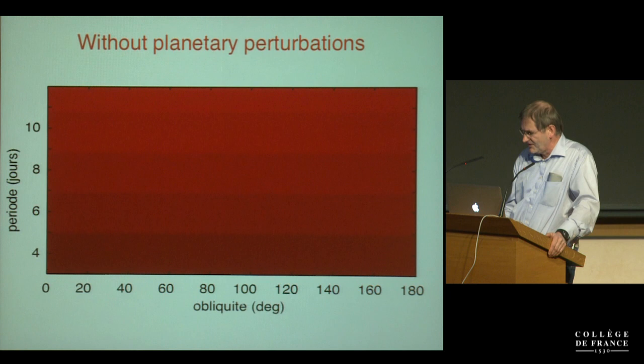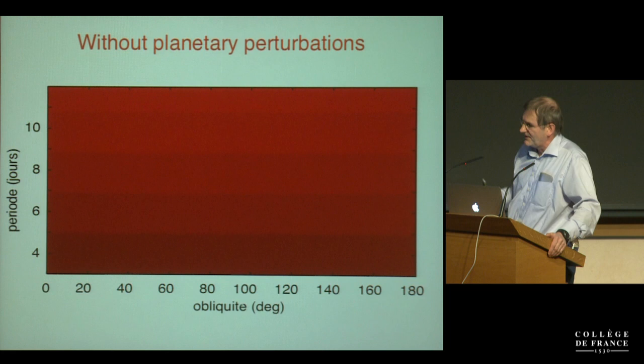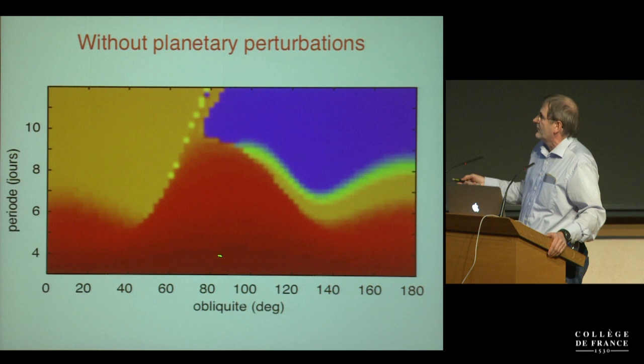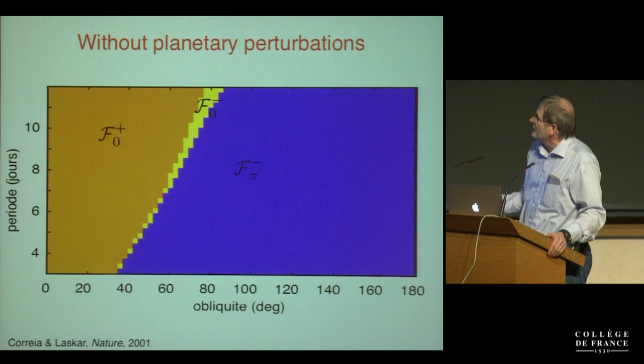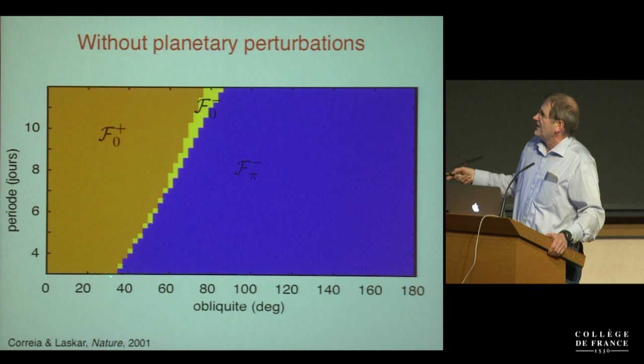Since Venus is not labeled, we cannot know the actual scenario. We can make simulations looking at the final outcome starting from any initial obliquity and rotation period. If you start at low obliquity you go to zero-degree obliquity; at large obliquity you go to 180 degrees. The results show three final states: zero-degree obliquity with prograde rotation, retrograde rotation at zero-degree obliquity, and retrograde rotation at 180-degree obliquity.